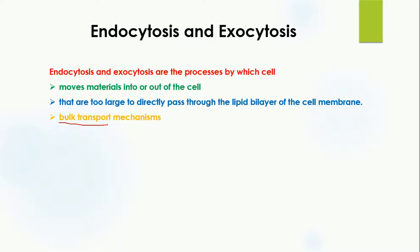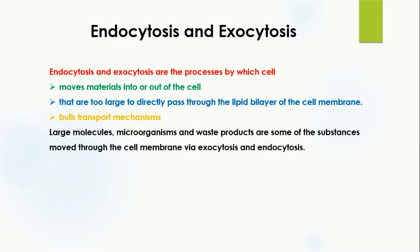For example, if you want to transport a large amount of molecules from inside a cell to outside, or from outside the cell to inside, you need one of these processes. Large molecules, microorganisms, and waste products are some substances which pass through the cell membrane via exocytosis and endocytosis.